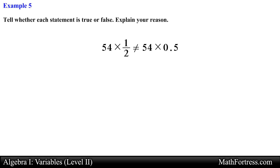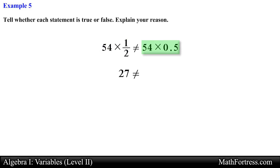How about the next statement: 54 times one-half does not equal 54 times 0.5. We need to simplify each side to compare them. The left-hand side simplifies to 27 and the right-hand side also simplifies to 27, because 0.5 can be rewritten as one-half. So the statement becomes 27 does not equal 27 — but 27 actually equals 27, so this statement is false.